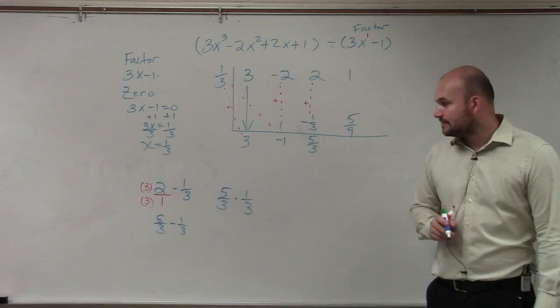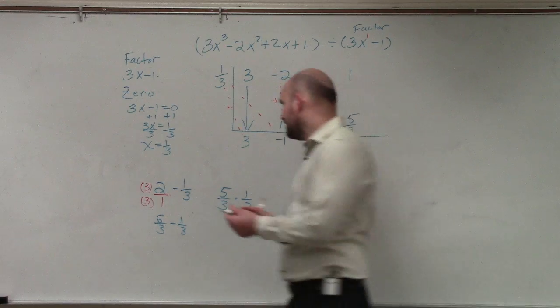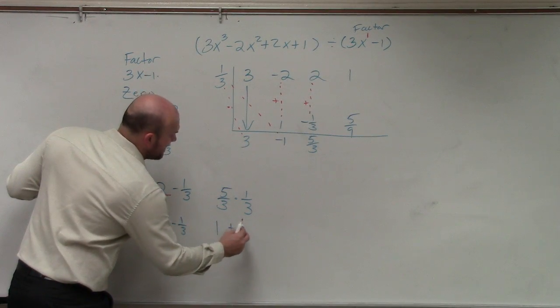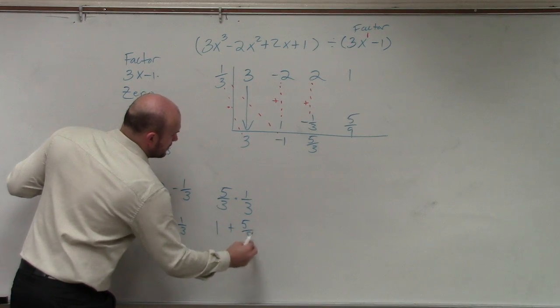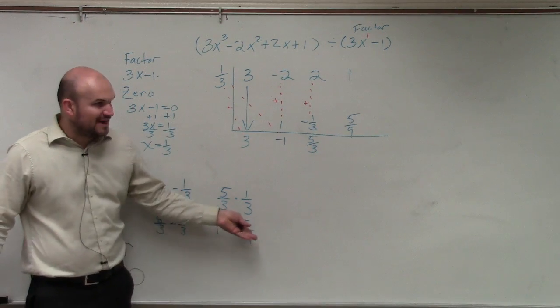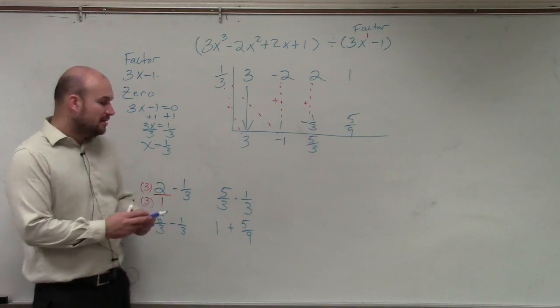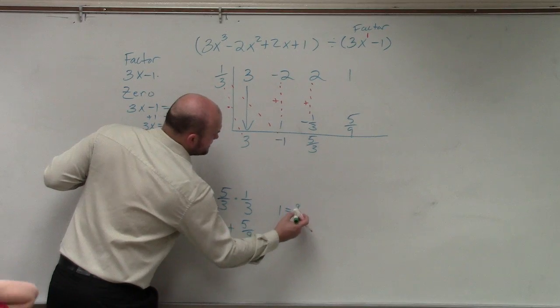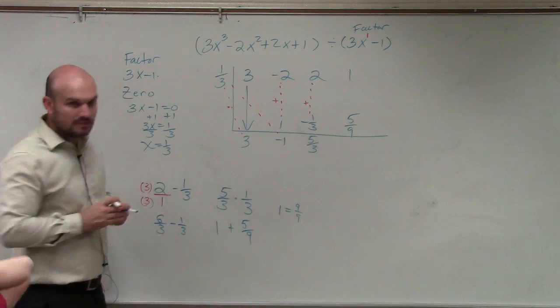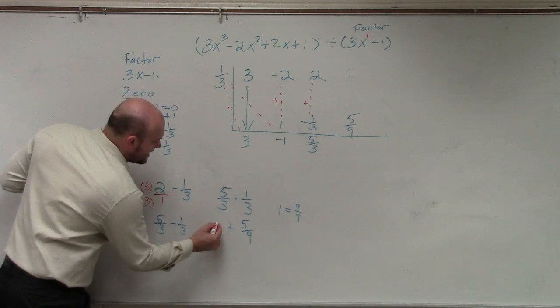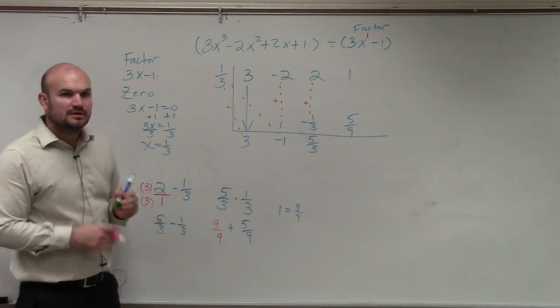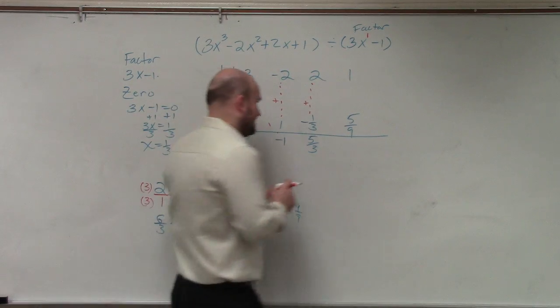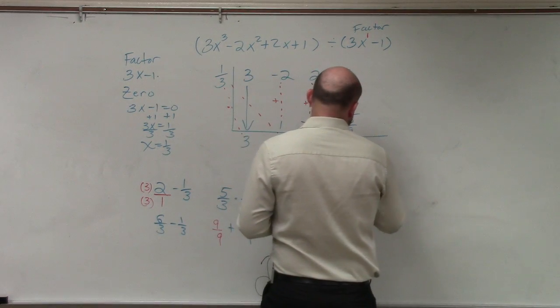So now my last step I need to do is I need to add 1 plus 5 ninths. Well guys, is 1 and 5 ninths, do they have the same denominator? No. But would you guys agree with me that 1 is equivalent to 9 over 9? So why don't I just write this as 9 over 9? Now can I add the numerators? Yes. So my final answer or my remainder is 14 over 9.